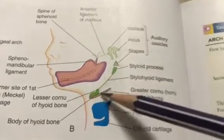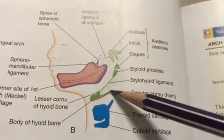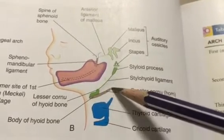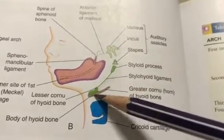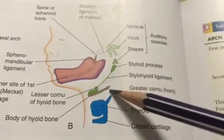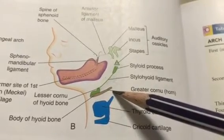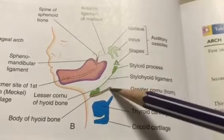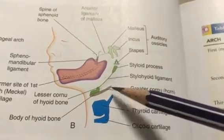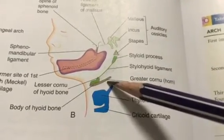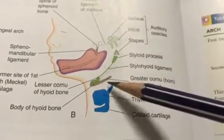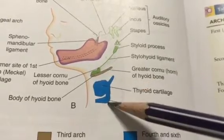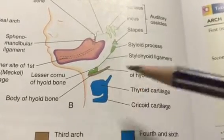The third arch forms the greater cornu and body of the hyoid bone. The nerve is the glossopharyngeal nerve, and the arteries are the common carotid, internal carotid, and external carotid arteries. The muscle of the third arch is stylopharyngeus.